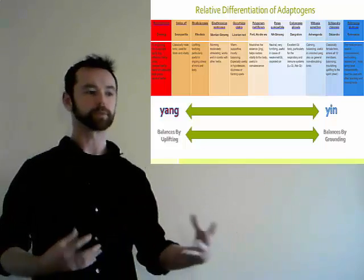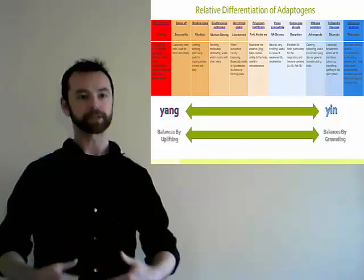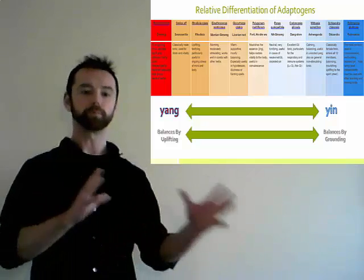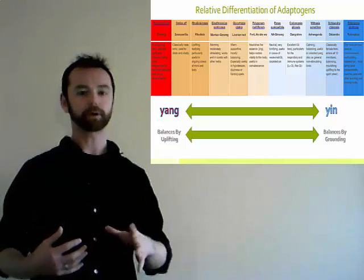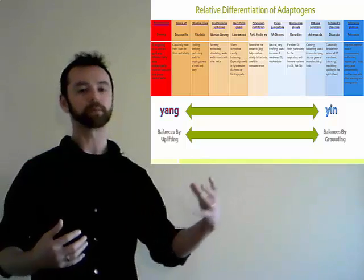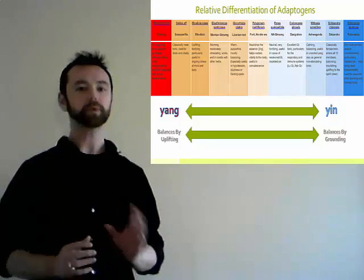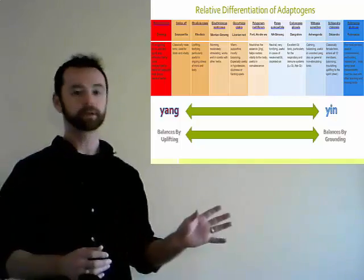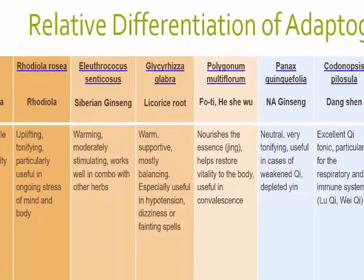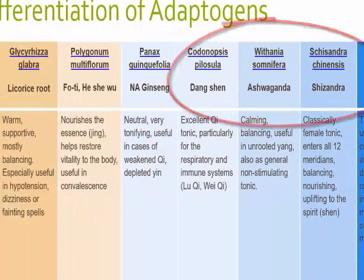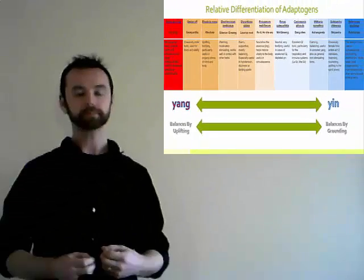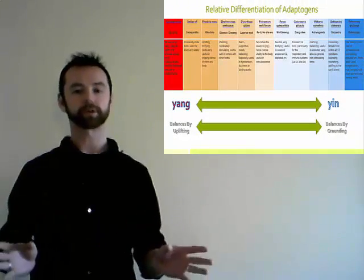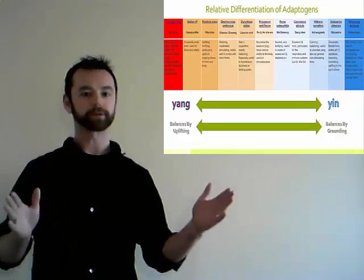In the opposite pattern, where we see more of a yin presentation — that heaviness, slowness, that lethargy — we balance that relative yin excess by adding our yang-type herbs. These are the herbs that balance by uplifting; they provide more yang, more energy. On our chart, the red side has our yang herbs, and the other side has the yin herbs. Right in the middle are herbs that work to nourish what we might call the essence. Let's take a look at the two extremes to start.